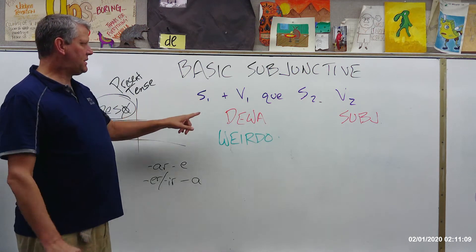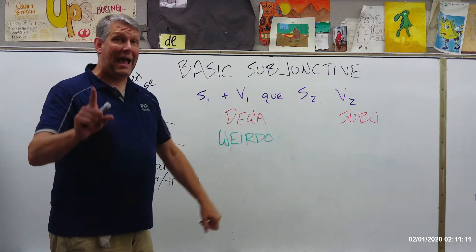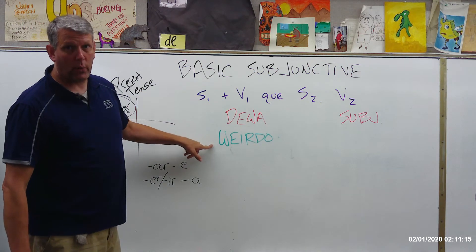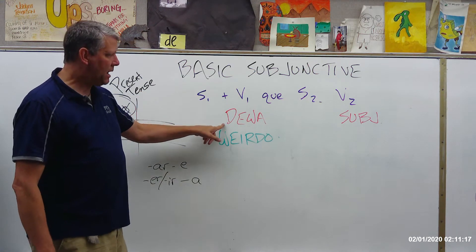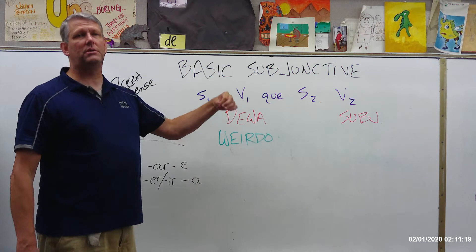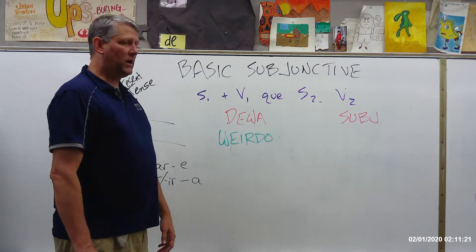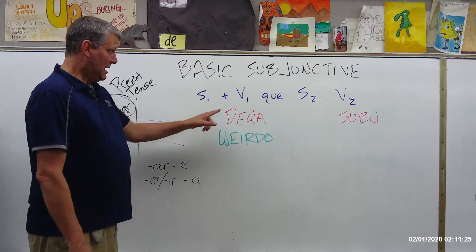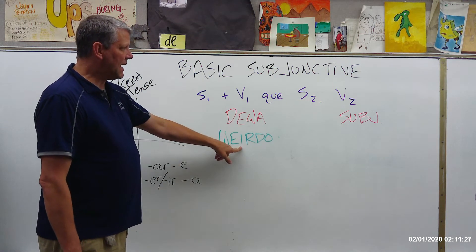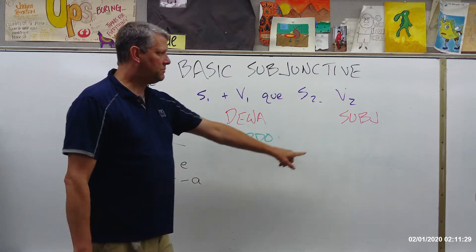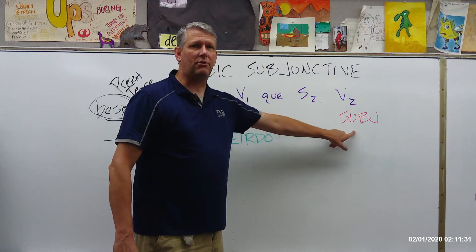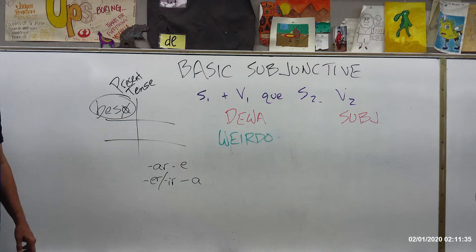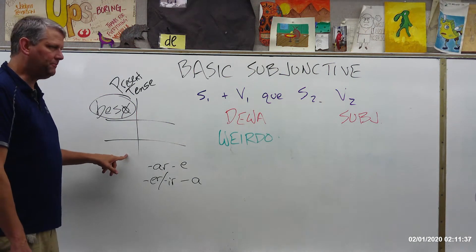So, if you have a sentence that has two different subjects and this first verb — V1 — expresses DIWA or WEIRDO: doubt, emotion, recommendations, what people want, what people hope for — if that verb expresses one of these, then the subjunctive will be placed in the second verb.